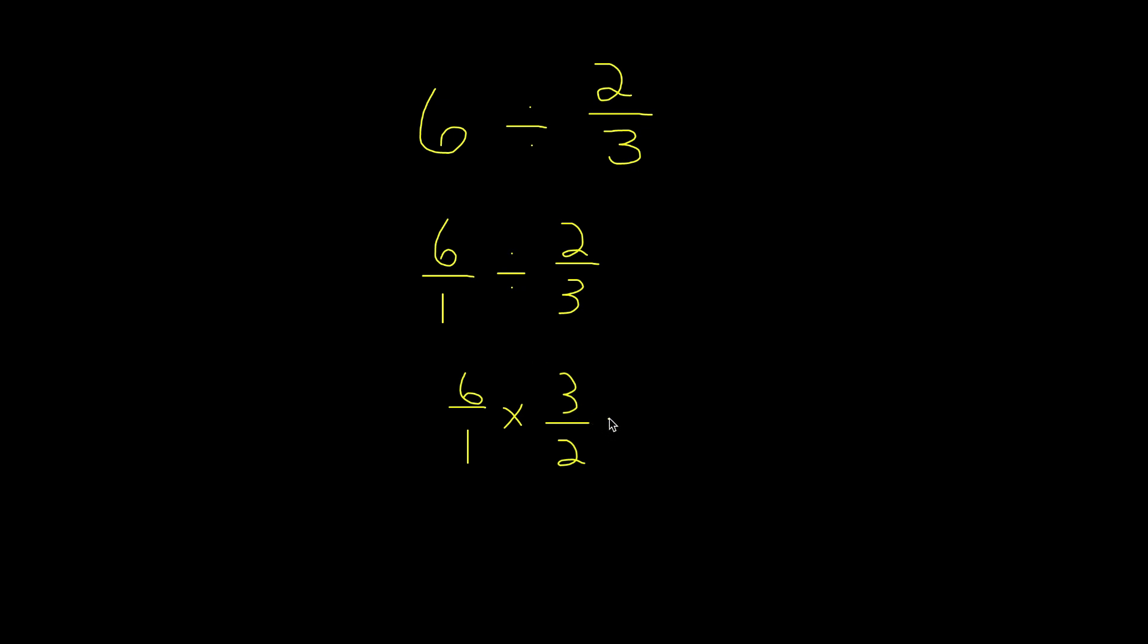And now, if you know how to multiply fractions, all we do is multiply the numerators and the denominators by each other. So 6 times 3 is 18. And 1 times 2 is 2. So 18 divided by 2 is 9. And 9 would be our answer.